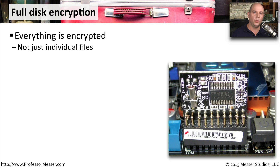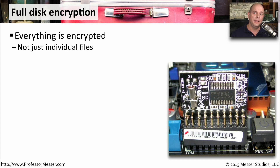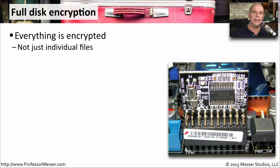One popular way of protecting our data these days is with full disk encryption, which means encrypting every single bit of data on a storage device. We're not encrypting individual files — we're encrypting all of the files, including the operating system. This becomes a little complicated when you're trying to determine how to boot an operating system that is already encrypted.